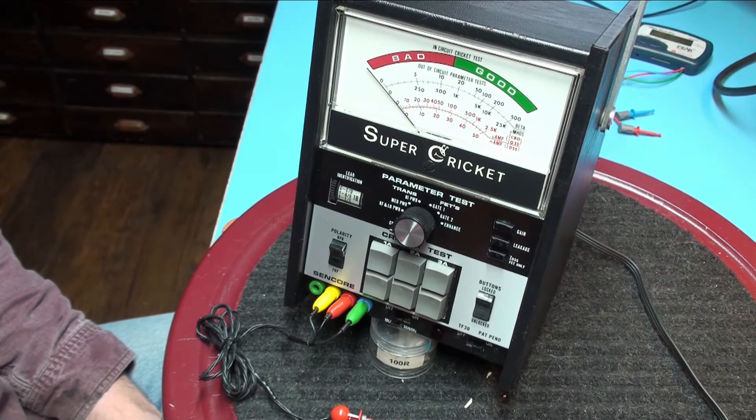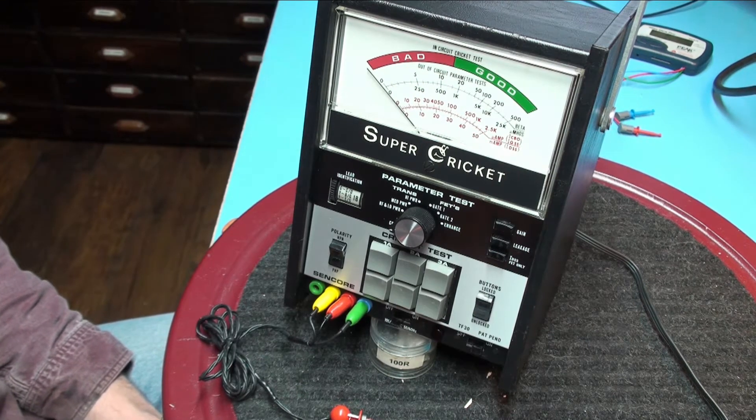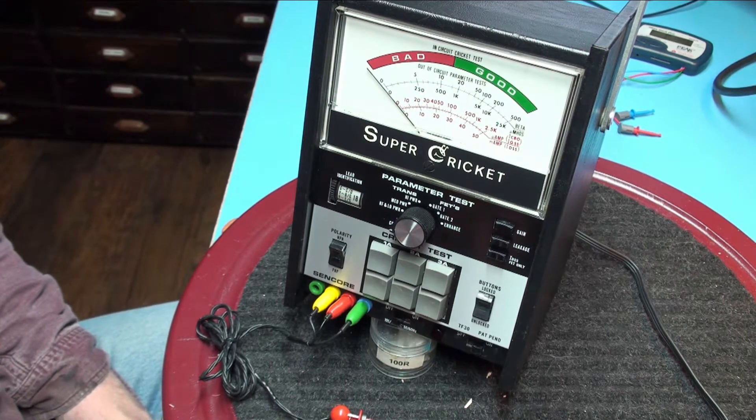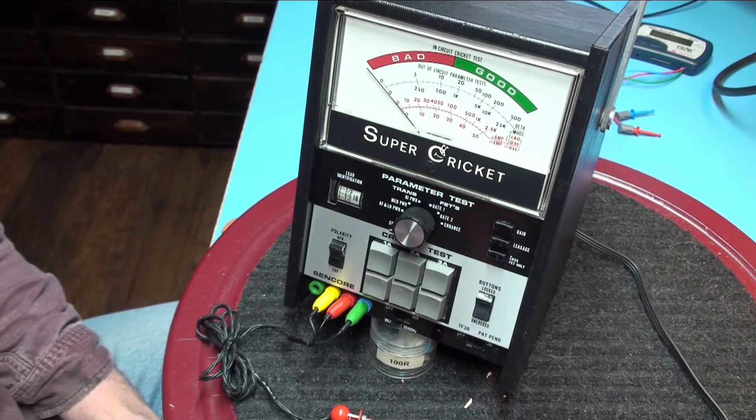You have fast in circuit good, bad test and out of circuit parameter test. This device can test the transistor in circuit and can determine whether it is good or bad without having to remove it.